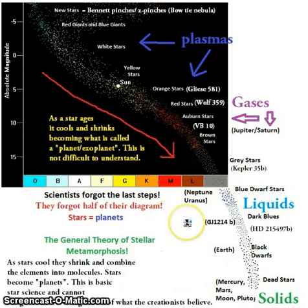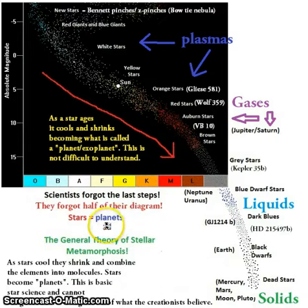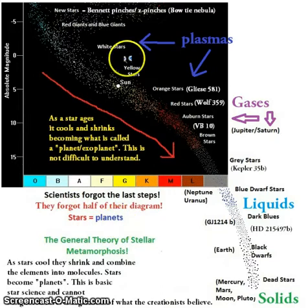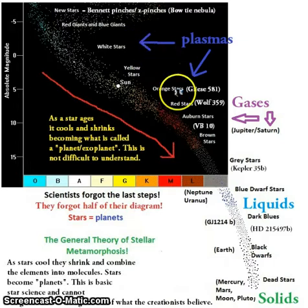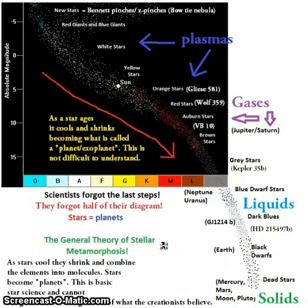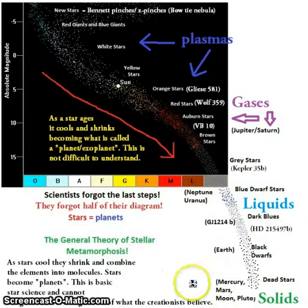The star is the new planet and the planet is the ancient star. Thus, the process of star evolution is the process of planet formation itself — the two were never mutually exclusive.